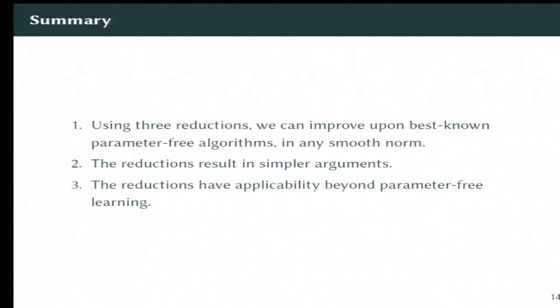So using these three reductions, we can actually improve upon some parameter-free algorithms. We can do second-order regret bounds that give you better adaptivity, and we can go to arbitrary norms. I think these reductions result in simpler arguments, but of course, that is an aesthetic point of view. And finally, I think these reductions have some applicability beyond parameter-free learning. In particular, we've discussed an application to learning with expert advice in the paper, and I would like to believe that there are others.